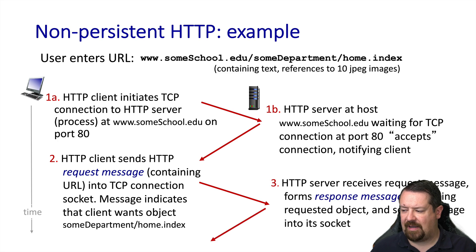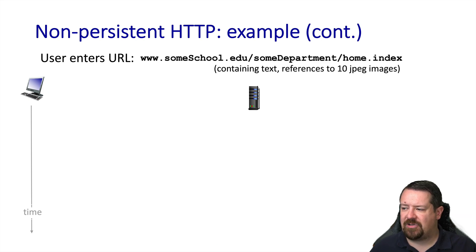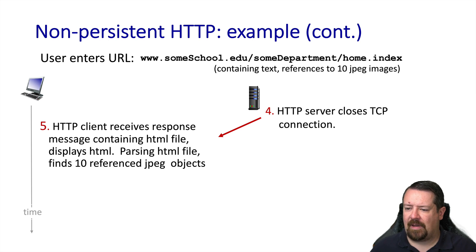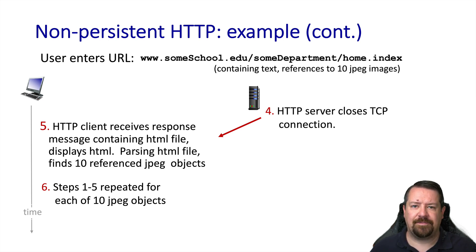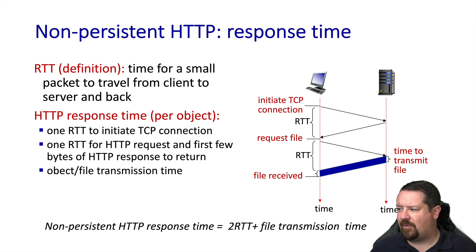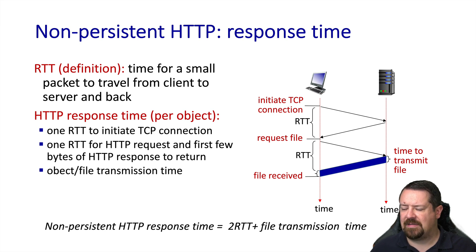Once the connection is established, the HTTP client may send a request for the base web page, and the HTTP server will respond by sending back that page in a message. Once that message is received, the server closes the TCP connection. At that point, the client receives the base HTML file, parses it, and finds that it needs 10 more objects. The client and server must then repeat this whole process for each of the 10 objects. With non-persistent HTTP, it has taken two round trip times to retrieve the base HTTP file.